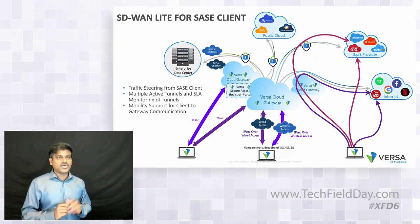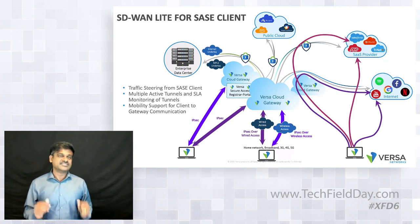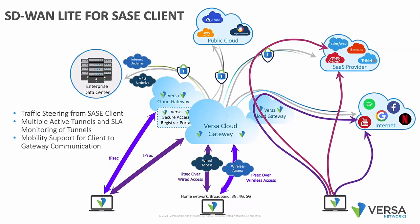The SASE client is the industry's first SD-WAN experience brought to an agent without requiring an SD-WAN device. We are able to create multiple tunnels — a purple tunnel or a blue tunnel — to different gateways. For example, if you have two applications, one in US West and the other in EMEA, Versa supports having application X traffic go through the blue tunnel and application Y through the purple tunnel, so you get the best experience for both applications simultaneously.